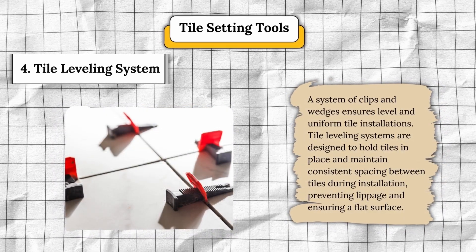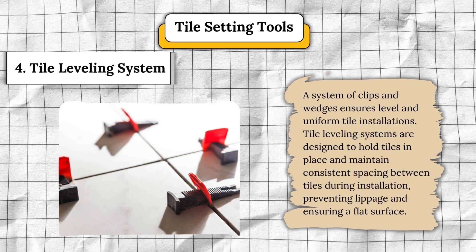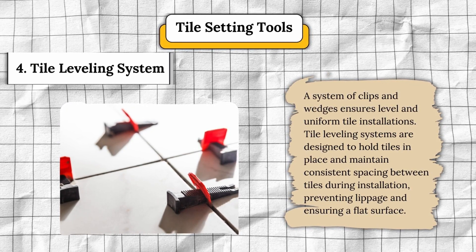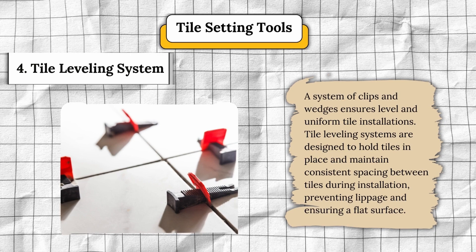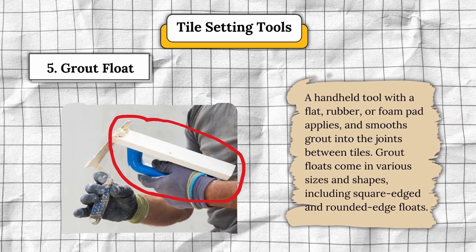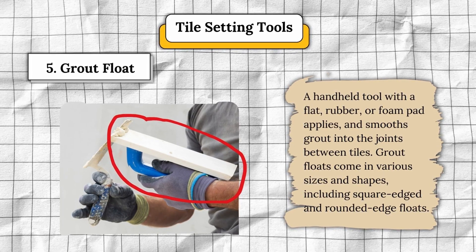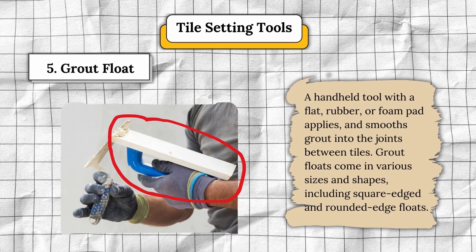Number four, tile leveling system — a system of clips and wedges that ensures level and uniform tile installations, holding tiles in place and maintaining consistent spacing to prevent lippage and ensure a flat surface. Number five, grout float — a handheld tool with a flat rubber or foam pad that applies and smooths grout into the joints between tiles, available in square-edged and rounded-edge types.